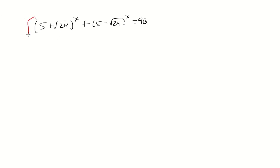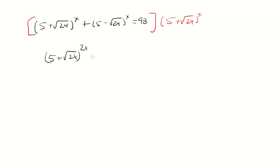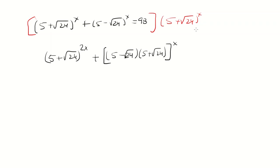So let's multiply both sides by 5 plus the square root of 24 raised to the x. We have two copies of 5 plus the square root of 24 raised to the x, so that's going to be 5 plus the square root of 24 raised to the 2x. Then we multiply 5 minus the square root of 24 with 5 plus the square root of 24, and factor out the exponent. Because you have the same exponent, you multiply the bases and then raise to the exponent.